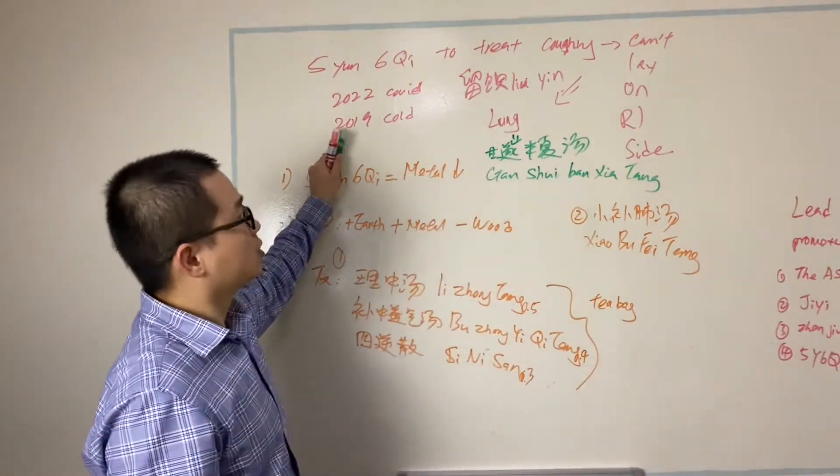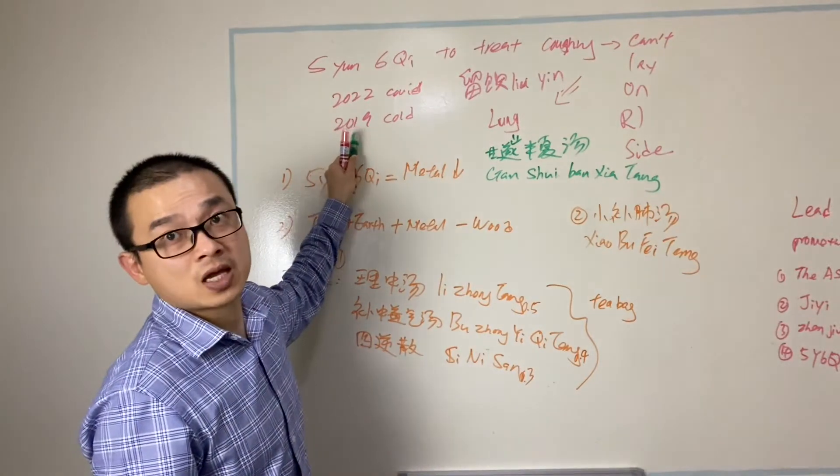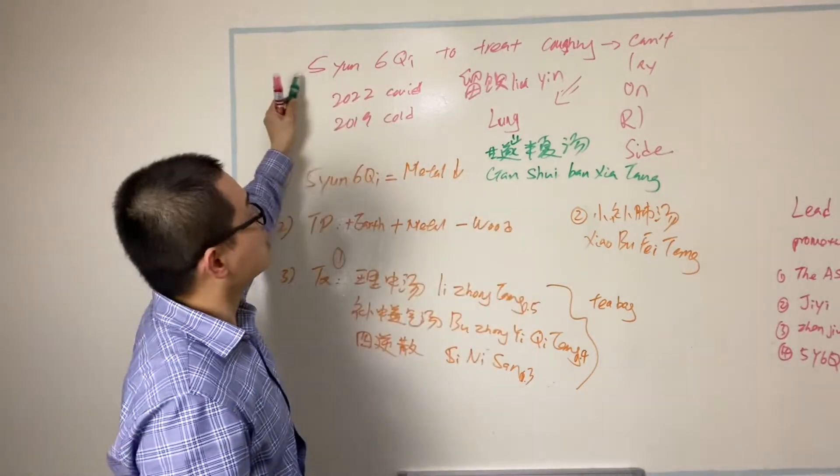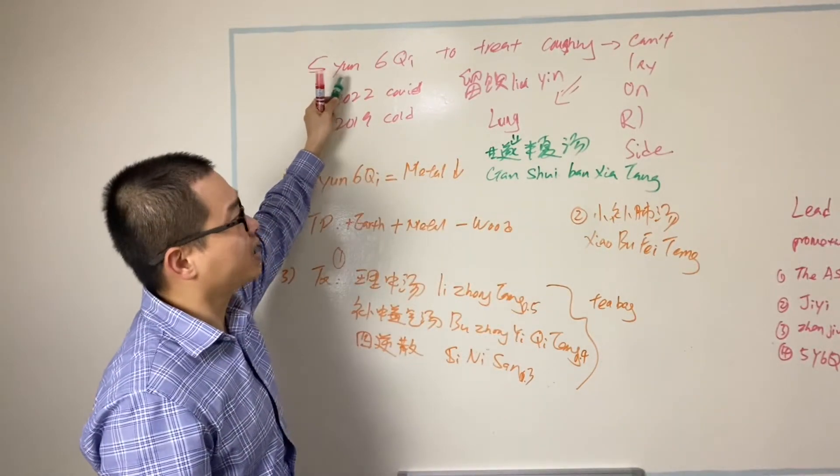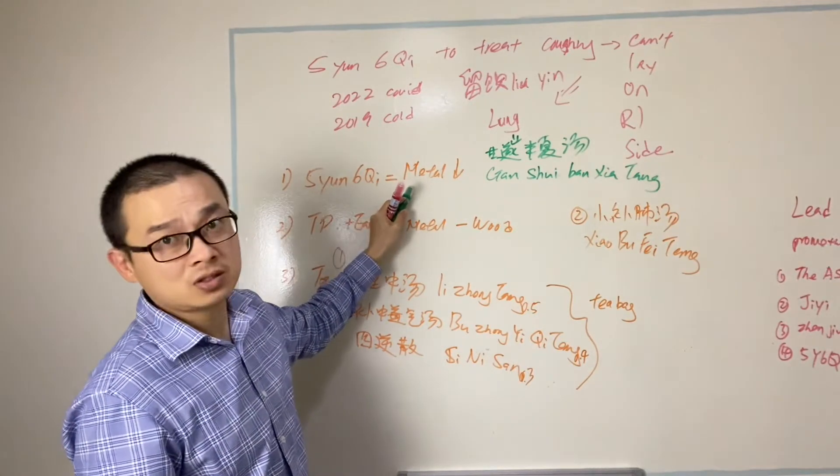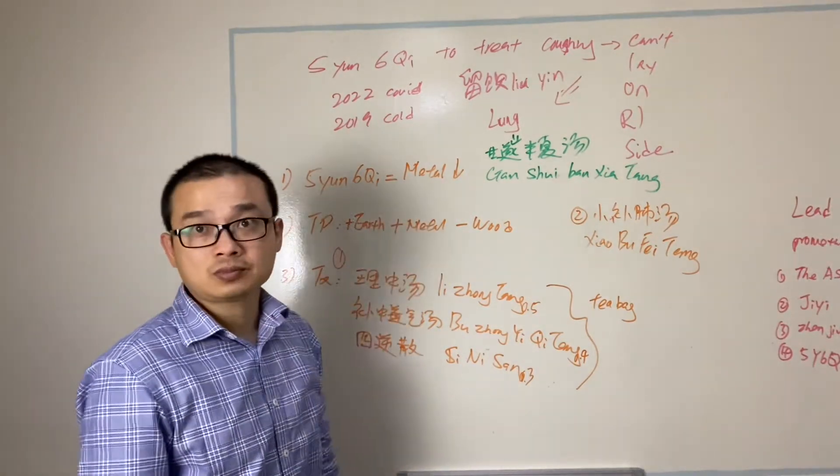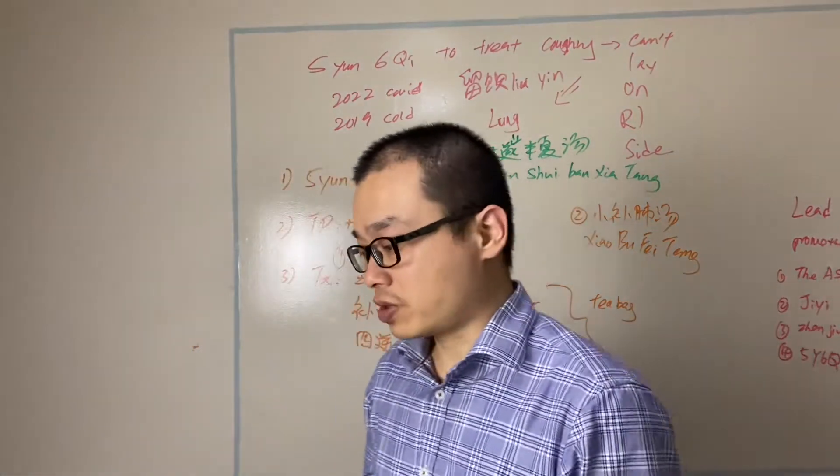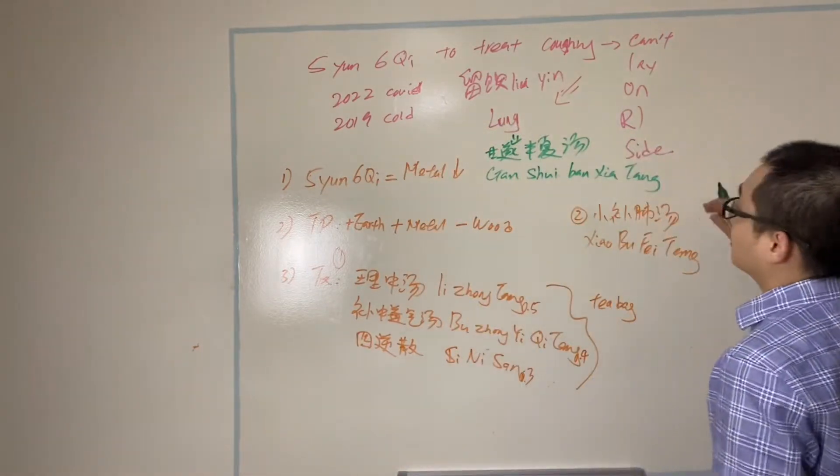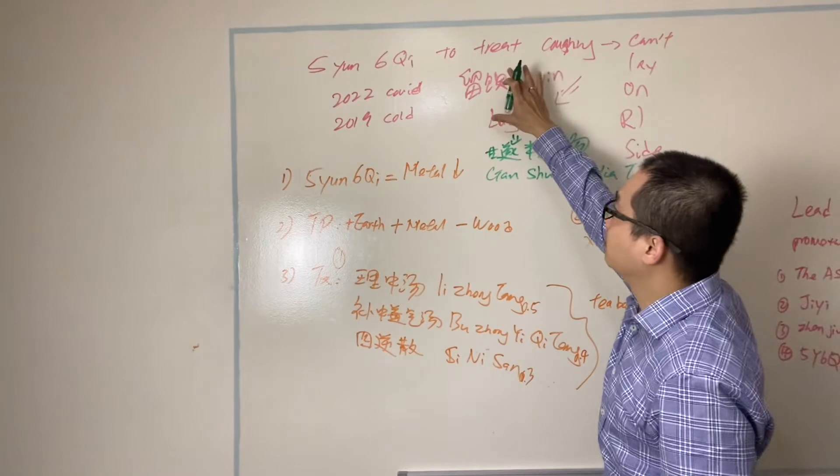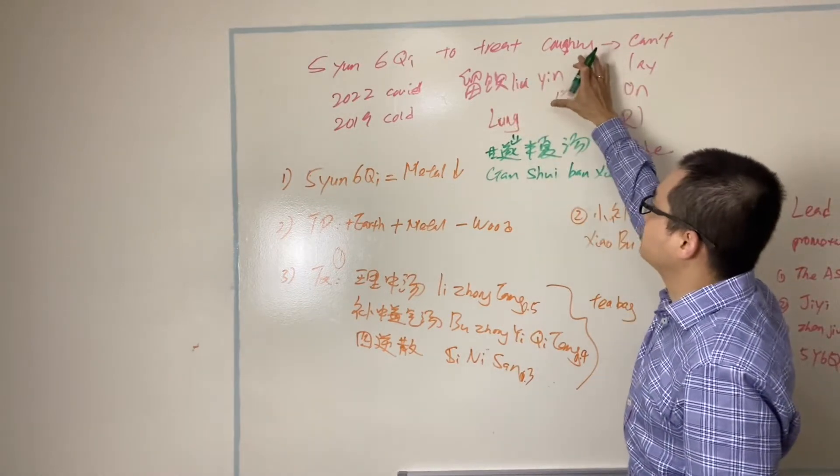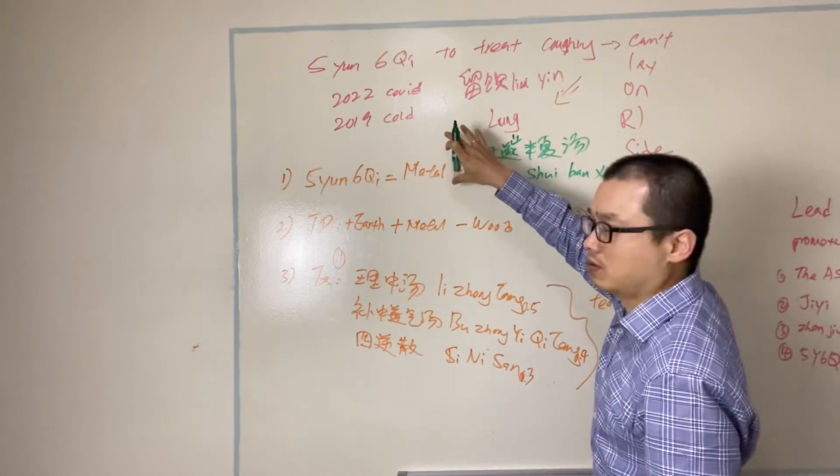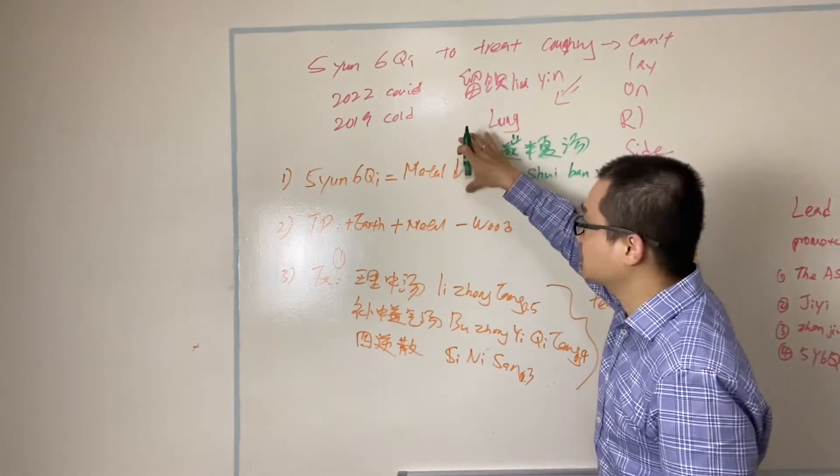Look, two years, it's been two years this condition. That's amazing. We use Wu Yun Liu Qi, accurately make the diagnosis and give herbs. This is fantastic. Now I want to share with you more things. In this case, it doesn't mean all patients that can't lay on the right side you're going to use this formula. The more important in here is the diagnosis.